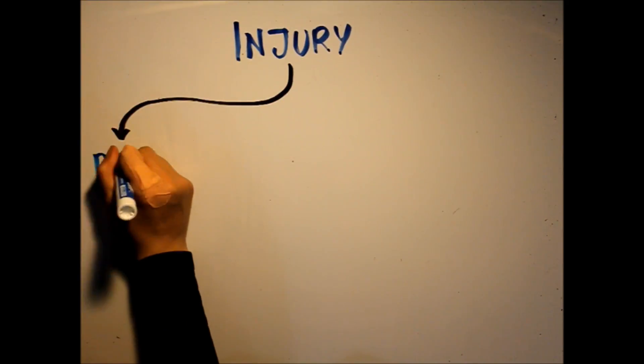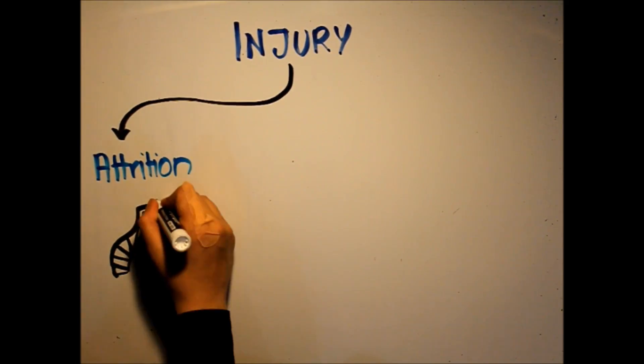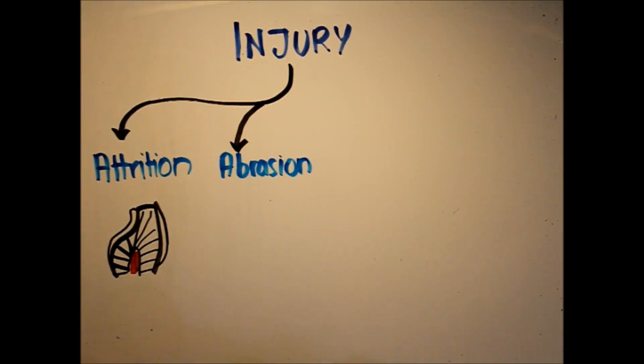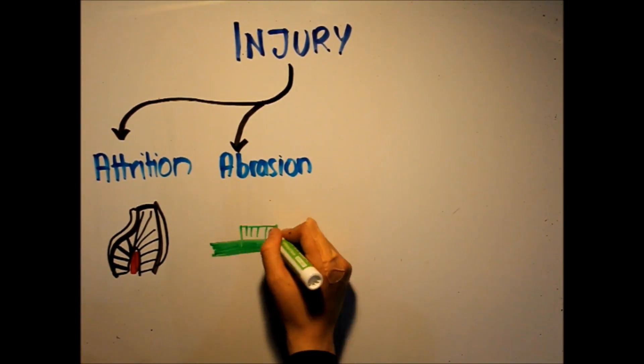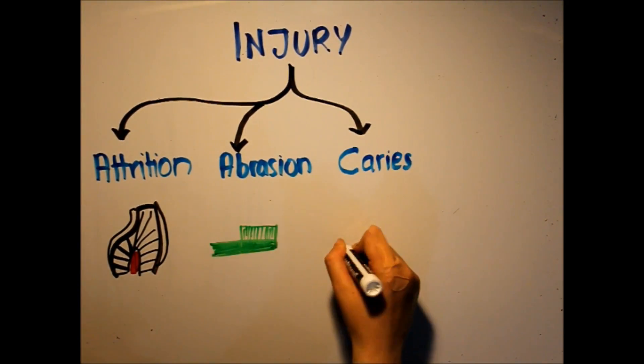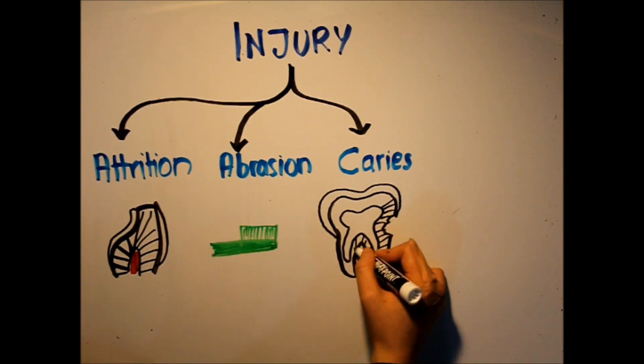Unlike primary and secondary dentin, tertiary dentin has no specific time for its formation. It's a protective mechanism by the odontoblasts as a response to injury. This injury could be in the form of attrition, abrasion, caries, or a cavity preparation. Its formation depends on the severity of the injury. The more severe the injury, the faster the rate of formation.